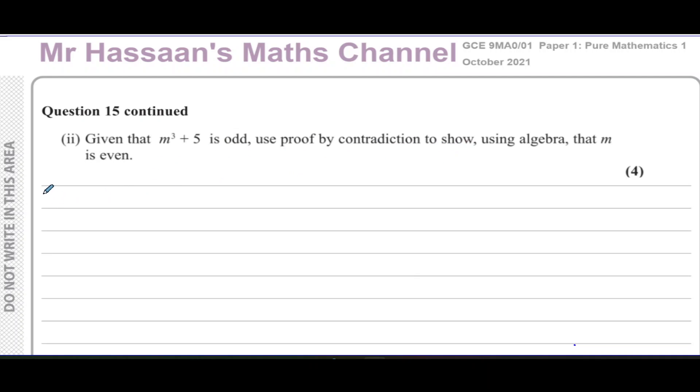Prove by contradiction means, first of all, you assume the opposite kind of what contradicts the statement. So we could say assume that if m³ + 5 is odd, then m is odd. It's like contradicting this. That's what we're going to assume.